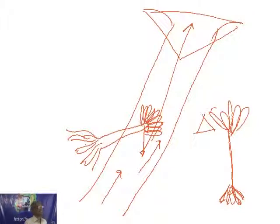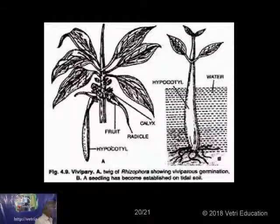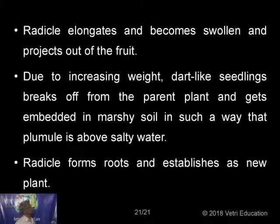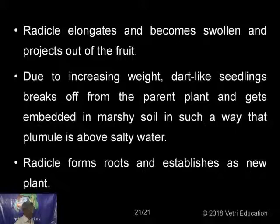Since they don't fall as seeds on the ground but as young plants, they sink to the bottom and attach there. The radicle forms a root and establishes a new plant. These are special adaptations seen in plants growing in marshy areas. The young plants are produced while still attached to the mother plant, then fall as young plants to anchor in the water bottom — a beautiful technique called vivipary.